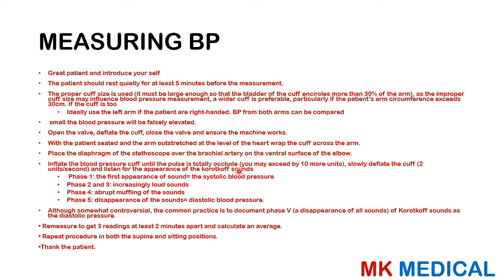Ensure the cuff is of appropriate size — the bladder of the cuff should encircle at least more than 80% of the arm. A cuff too small gives very high readings; too big gives very low readings. Ideally use the left arm if the patient is right-handed, and compare readings from all arms and legs if making a diagnosis of hypertension. Open the valve to deflate the cuff before placing it, then close the valve. Seat the patient with the arm outstretched at the level of the heart.